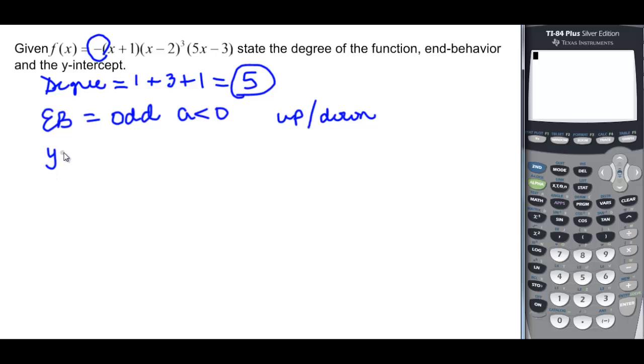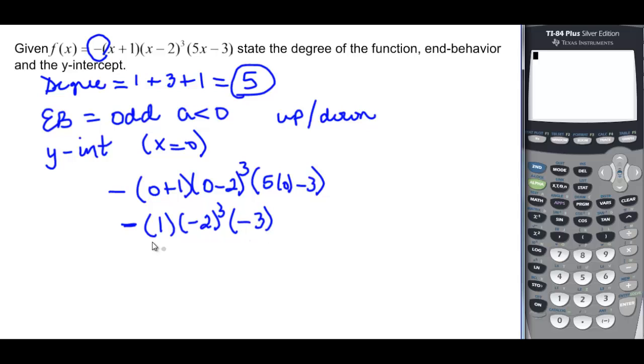And then they want us to do the y-intercept. Well, hopefully we've done enough of these that you remember that x equals 0. So we're really saying the opposite of 0 plus 1 times 0 minus 2 cubed times 5 times 0 minus 3. So we have a negative, and then this is just going to be 1. This is negative 2 cubed.